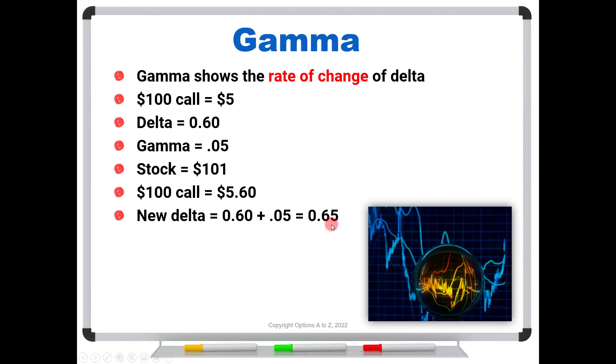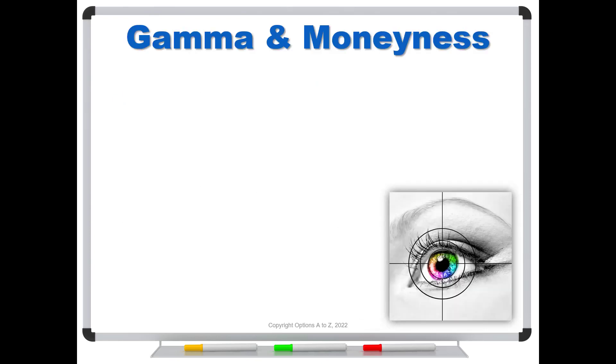And of course, we'll get a new gamma. That's always going to change unless you either hit delta 0 or delta 1, in which case gamma will be 0. So now with that little review in the background, let's take a closer look at gamma and moneyness.